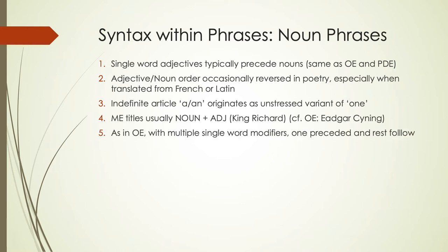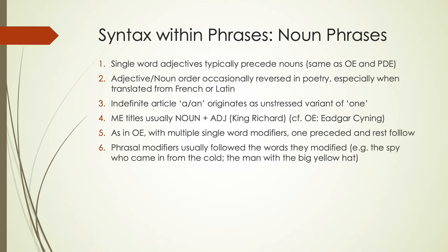With Old English and Middle English, when there are multiple modifiers for words, typically one of them preceded it and the rest would follow — something we no longer do in present-day English. Phrasal modifiers usually follow the words they modify, which is also something we see in present-day English, such as 'the spy who came in from the cold' or 'the man with the big yellow hat.' When you have a dependent clause attached to a noun phrase, you see it after the noun it modifies.